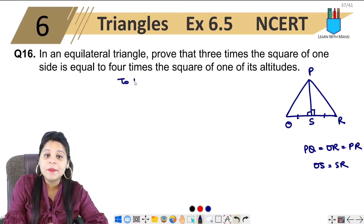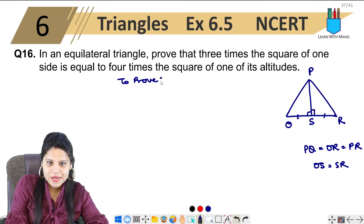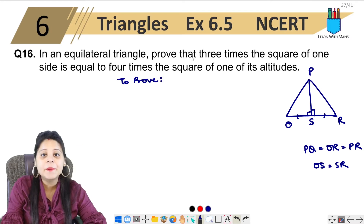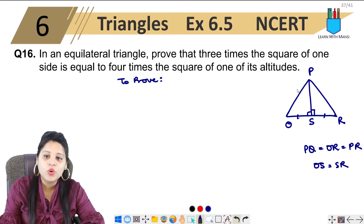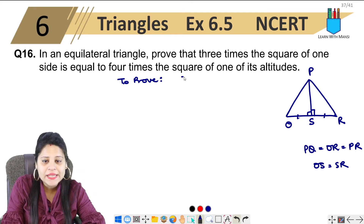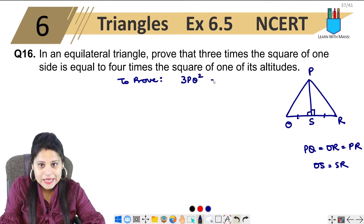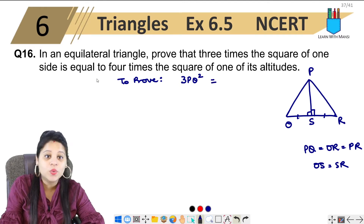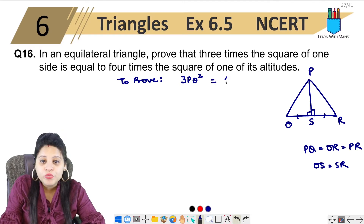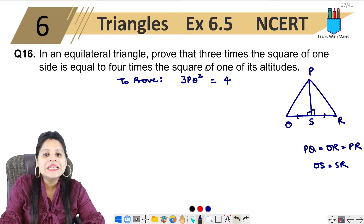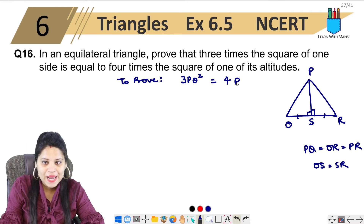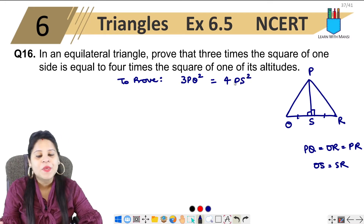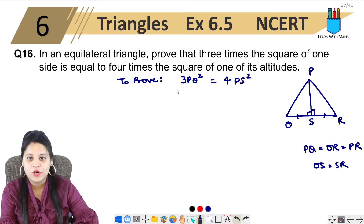Now let's restate what we have to prove. We need to prove that 3 times the square of one side — let's say PQ squared — is equal to 4 times the square of one of its altitudes, which is PS squared.